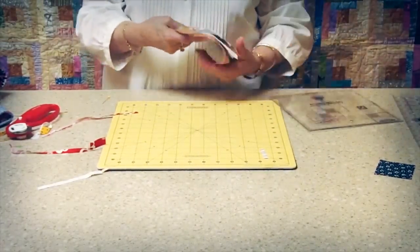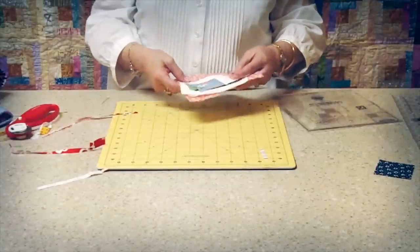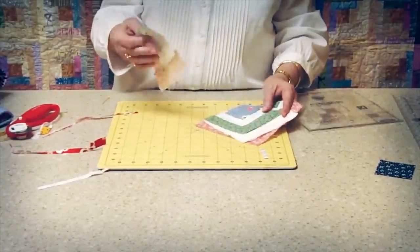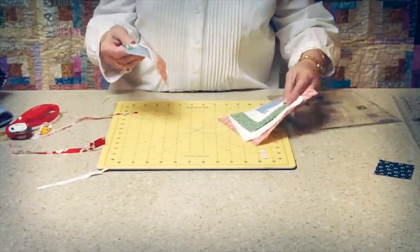Now the courthouse blocks are also trimmed the same way as the log cabin. But the half log cabin blocks are trimmed a little differently. So I want to show you them.